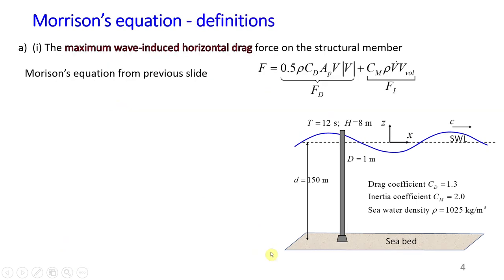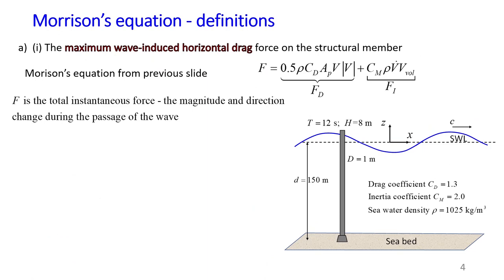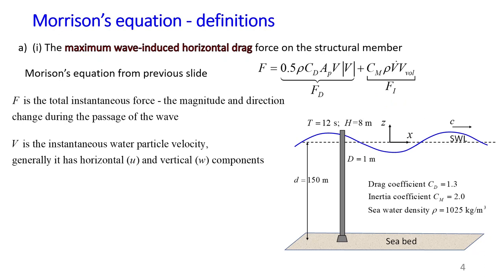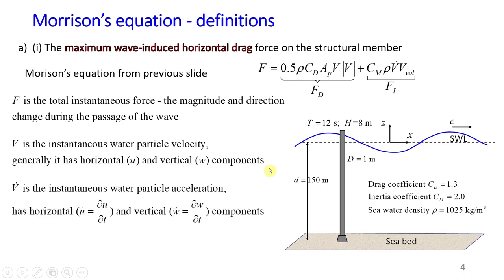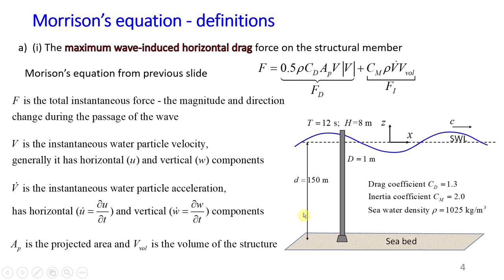To calculate this, I'd like to remind you of some parameter definitions from Morrison's equation. There are two terms: drag force and inertia force due to waves. F on the left-hand side is the total instantaneous force; FD is the instantaneous drag force; FI is the instantaneous inertia force. Capital V is the instantaneous water particle velocity, which generally has two components: horizontal U and vertical W. V with a dot on top is the instantaneous water particle acceleration, with components horizontal U-dot and vertical W-dot. AP is the projected area and V subscript volume is the volume of the structure.